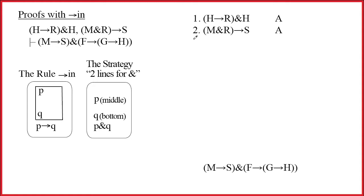Line 1 has an ampersand as its main connective. Let's break it up. So h arrow r, and then on line 4, I'll write h. It's 1 ampersand out, done twice. Okay, check off line 1.